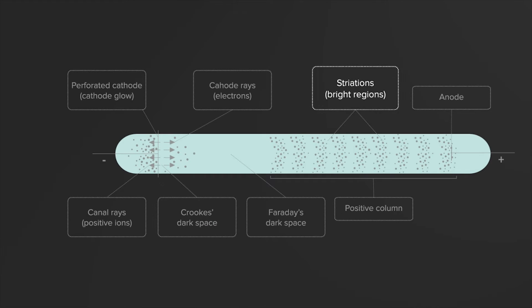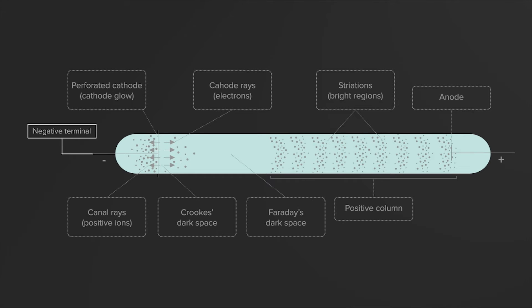The striations are the brighter regions. Remember, the electrons flow from the cathode, which is the negative terminal. The different pressures will produce different patterns within the tube. This discharge tube is the highest pressure. You can see that the entire interior of the tube is glowing. This was referred to as positive and negative glow, and is caused by electrons colliding with gas molecules within the tube, resulting in the emission of visible light.